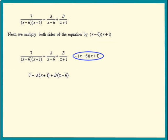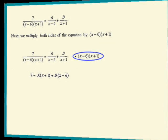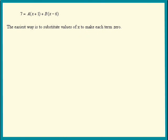There are actually two approaches. The easiest way is to substitute values of x in order to make each term zero. Notice the factor x plus 1. If we put x equal to negative 1 in there, the a will disappear and we'll be able to solve for b.